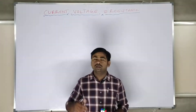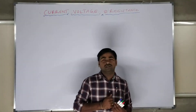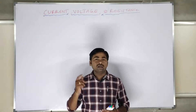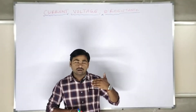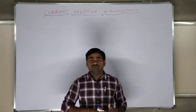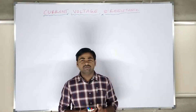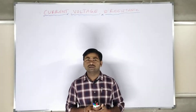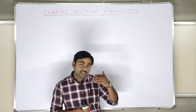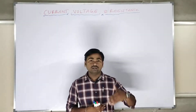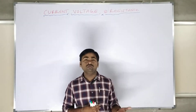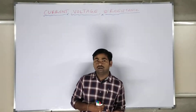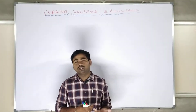The terms we hear — current, voltage, and resistance. We learn many textbook definitions of what current and voltage are, but what actually is current? What actually is voltage? What is each one doing? Are they the same, or different? What do the individual parameters do?